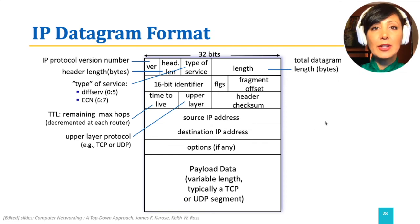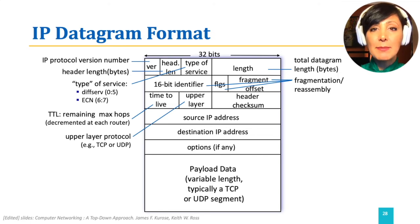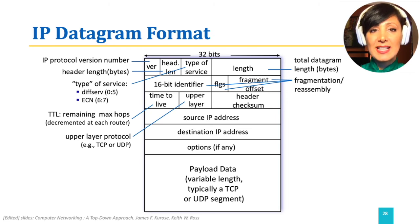Identifier, flags, and fragment offset are used in IP fragmentation and reassembly, breaking down IP datagrams and putting them back together again when necessary.